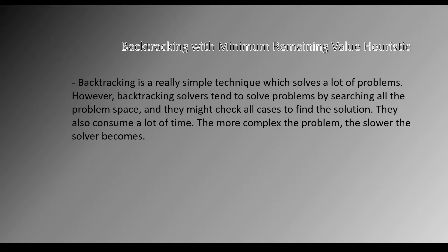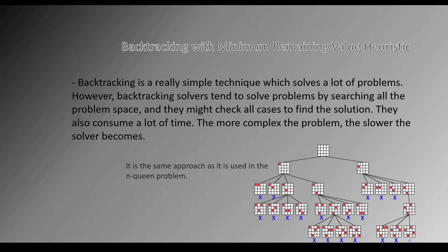Let's start with the backtracking method with minimum remaining value heuristic. Backtracking is a really simple technique which solves a lot of problems. However, backtracking solvers tend to solve problems by searching all of the problem space and they might check all cases to find the solution. They also consume a lot of time — the more complex the problem, the slower the solver becomes. If you know the N-Queens problem, it's the same approach used to solve it: backtracking.